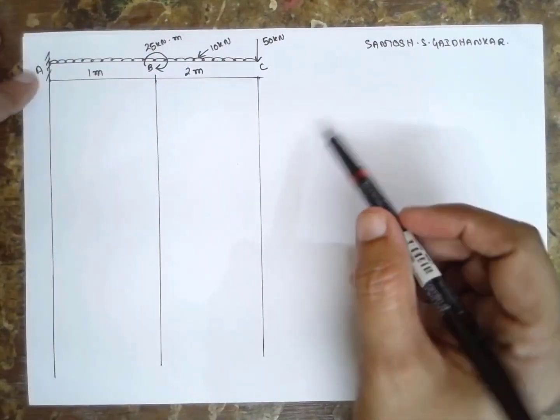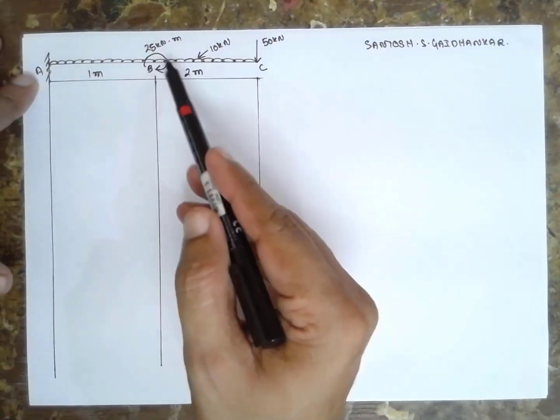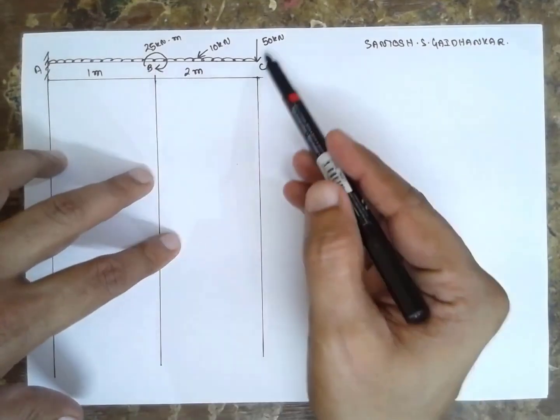I am solving the problem of a cantilever beam having a couple in an anti-clockwise direction and a point load.